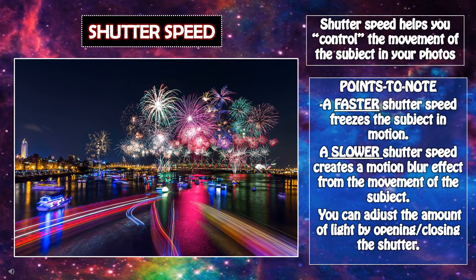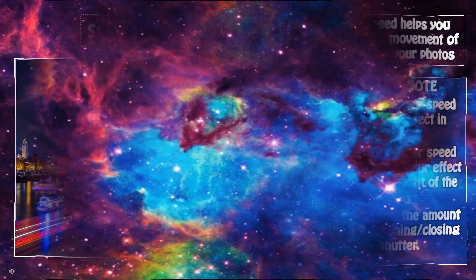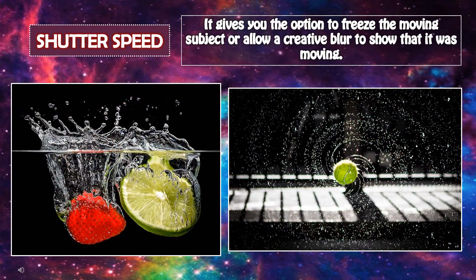Shutter speed. Shutter speed helps you control the movement of the subject in your photos. Points to note: A faster shutter speed freezes the subject in motion. A slower shutter speed creates a motion blur effect from the movement of the subject. You can adjust the amount of light by opening and closing the shutter. Shutter speed gives you the option to freeze the moving subject or allow a creative blur to show that it was moving.